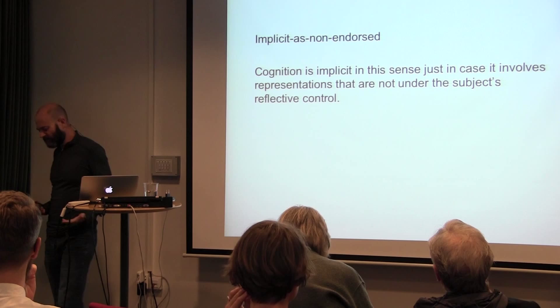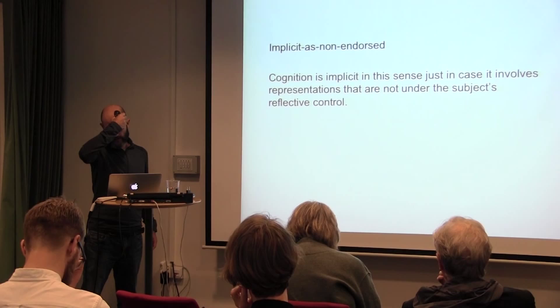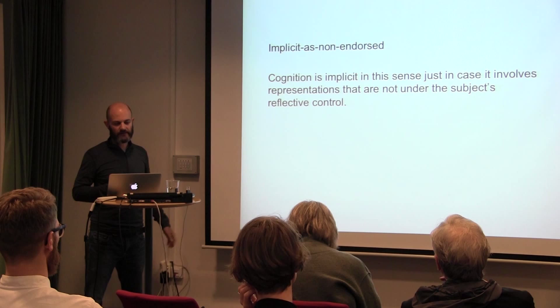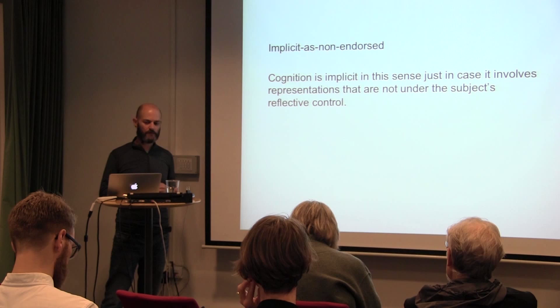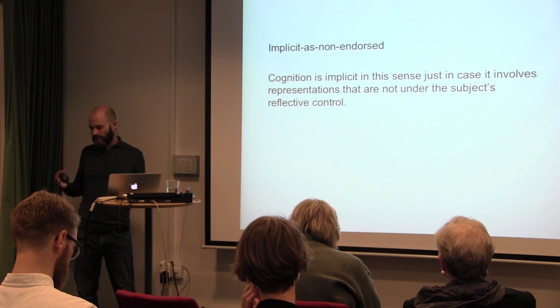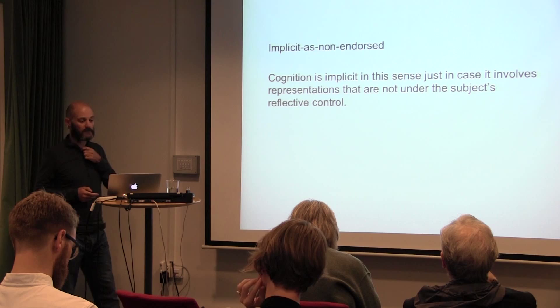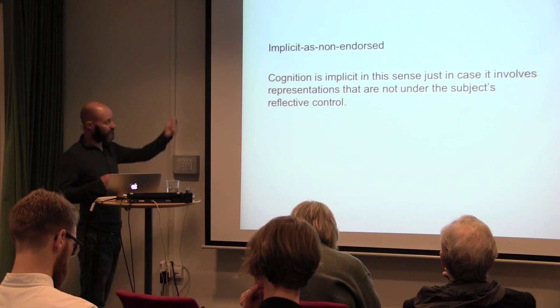If implicit attitudes can be conscious, there's daylight between 'implicit' as used in that literature and 'implicit' as unconscious. In the attitudes literature, implicit seems to mean something like: representations not under the subject's reflective control — not part of the machinery of the mind that's open to conscious endorsement the way judgment is. Judgment may not be under direct voluntary control, but there's a sense in which it's open for endorsement and under reflective control. So we have three notions: implicit as covert, implicit as unconscious, and implicit as non-endorsed or not under reflective control.